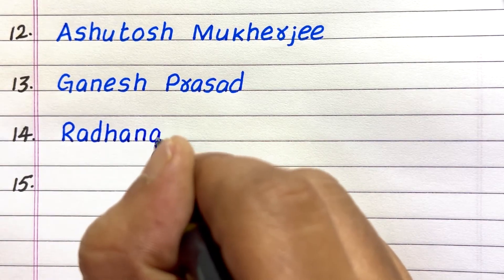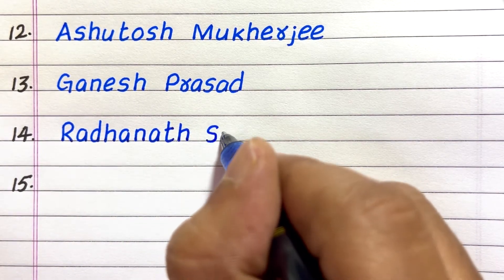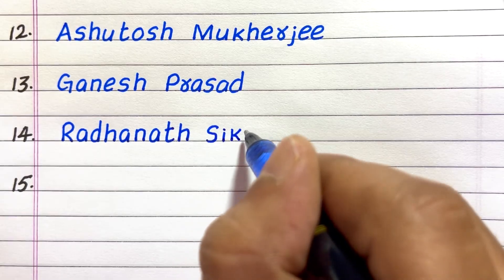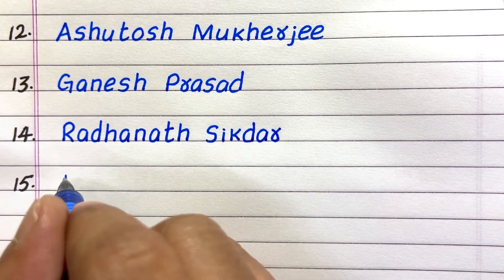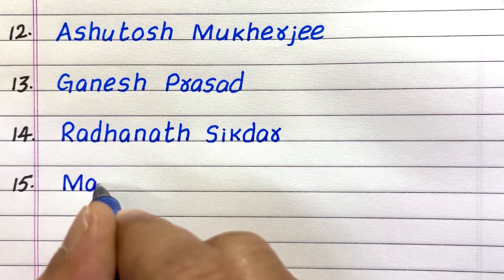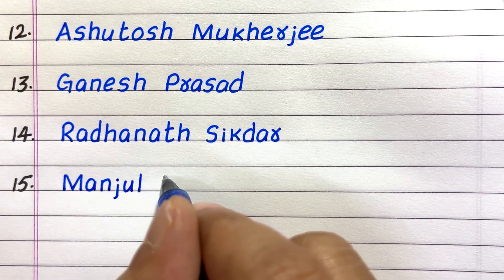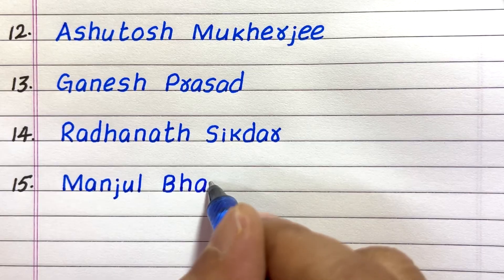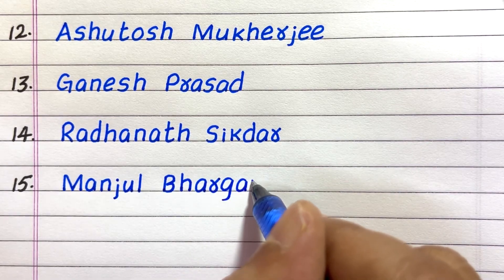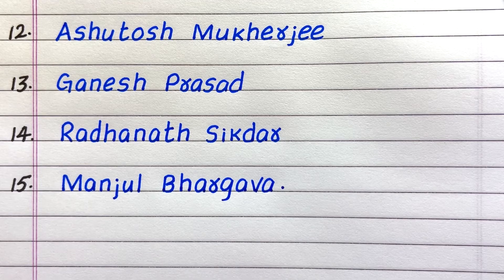14th name of a famous Indian mathematician is Radhanath Siddhar. 15. Manjil Bhargava.